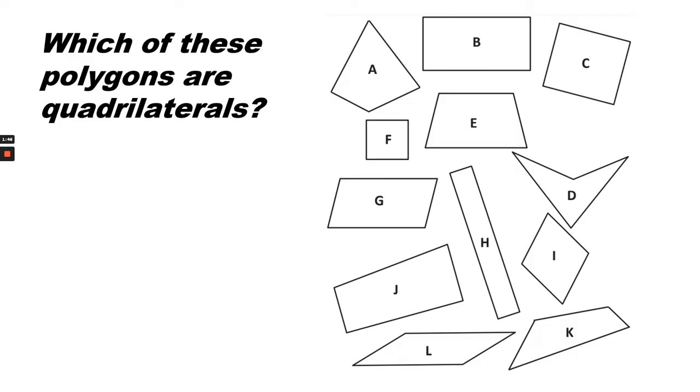Which of these polygons are quadrilaterals? Answer. They are all quadrilaterals because each polygon has four sides.